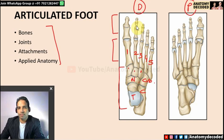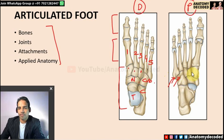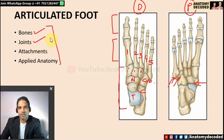The fifth metatarsal has a characteristic projection called the styloid process of the fifth metatarsal. The cuboid bone has a groove for the fibularis longus muscle. The navicular bone has a feature called the navicular tuberosity.